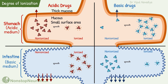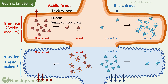Our next factor is related to ionization: it's gastric emptying. Gastric emptying sends the drug into the intestine, where absorption is better, as we just discussed. So faster gastric emptying makes the absorption faster, and delayed gastric emptying makes the absorption slower.